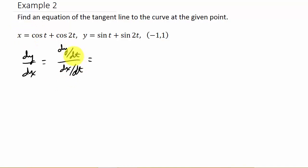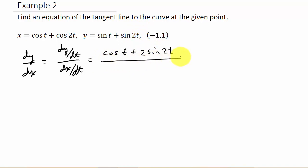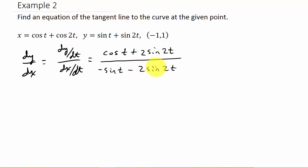The derivative of y with respect to t: the derivative of sine t is cosine t, plus the derivative of sine 2t, which is cosine 2t times 2 by the chain rule. And then the derivative of x with respect to t: the derivative of cosine t is negative sine t, and then the derivative of cosine 2t gives us negative sine 2t times 2, so that's minus 2 sine 2t. There's your derivative.